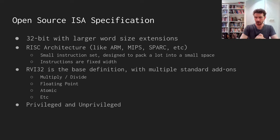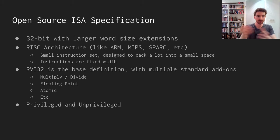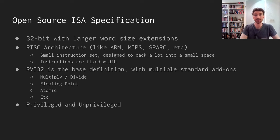It's an open architecture, and the base architecture is a 32-bit word size, with extensions for even bigger word sizes like 64 and larger. It's a RISC architecture — obviously it's in the name — but RISC-V and RISC architecture are two different things. RISC architecture is a general concept with properties like a small instruction set designed to pack tons of information into a 32-bit word. Instructions are usually fixed-width in RISC architecture, so everything has to fit in 32 bits.